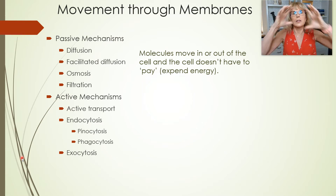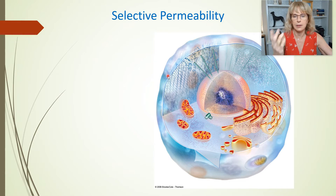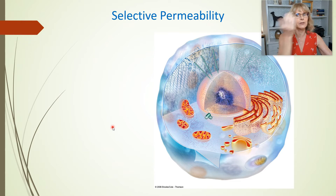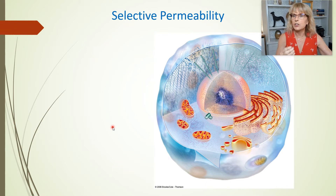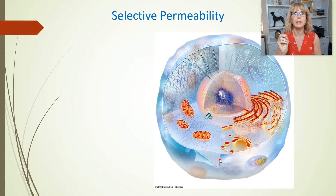The cell membrane is selectively permeable. This cell membrane — this sort of dome around the factory on Mars as I usually analogize it — is responsible for controlling what goes into the cell and what comes out of the cell. This is the boundary. There are some things that are allowed to go right across, just like air going through the screens on your window, but other things are not allowed to go across.